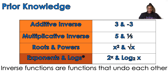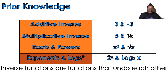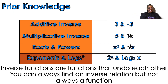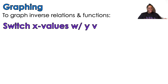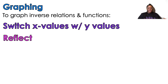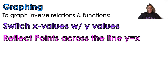So inverse functions are functions that undo each other. Three and negative three undo each other for addition; five and one-fifth undo each other for multiplication; a square root undoes a square. You can always find an inverse relation, but you cannot always find an inverse function — more on that to come. To graph inverse relations, you switch x-values with y-values and reflect points across the line y = x.